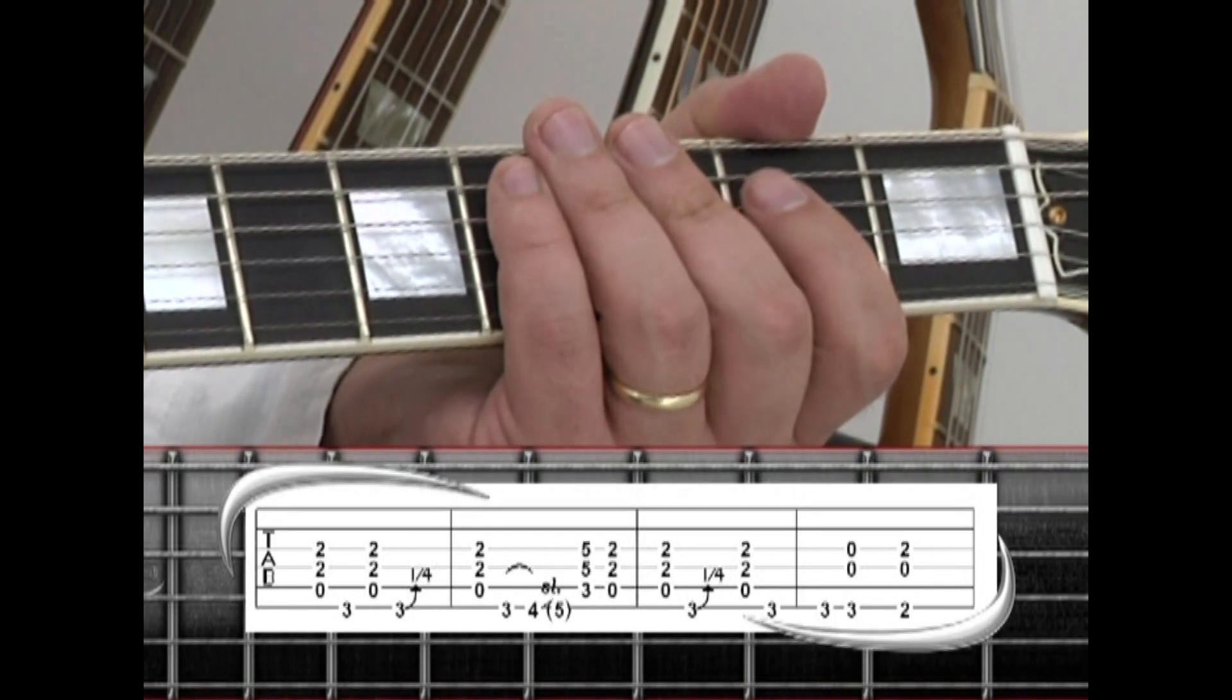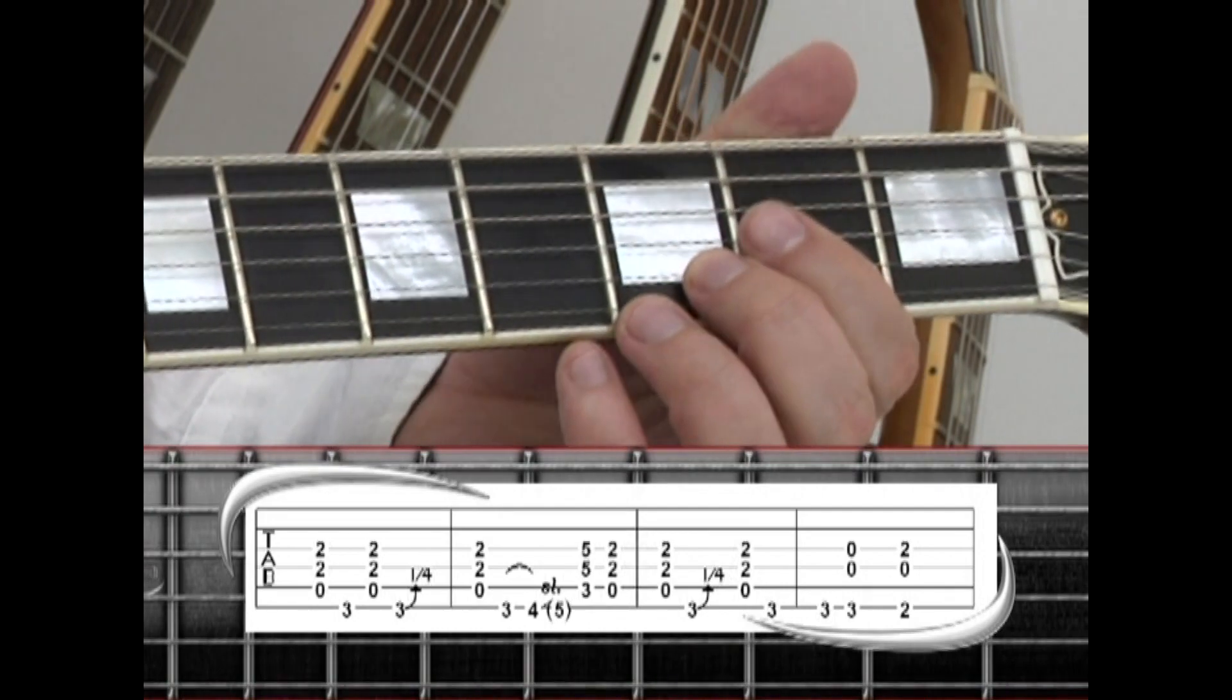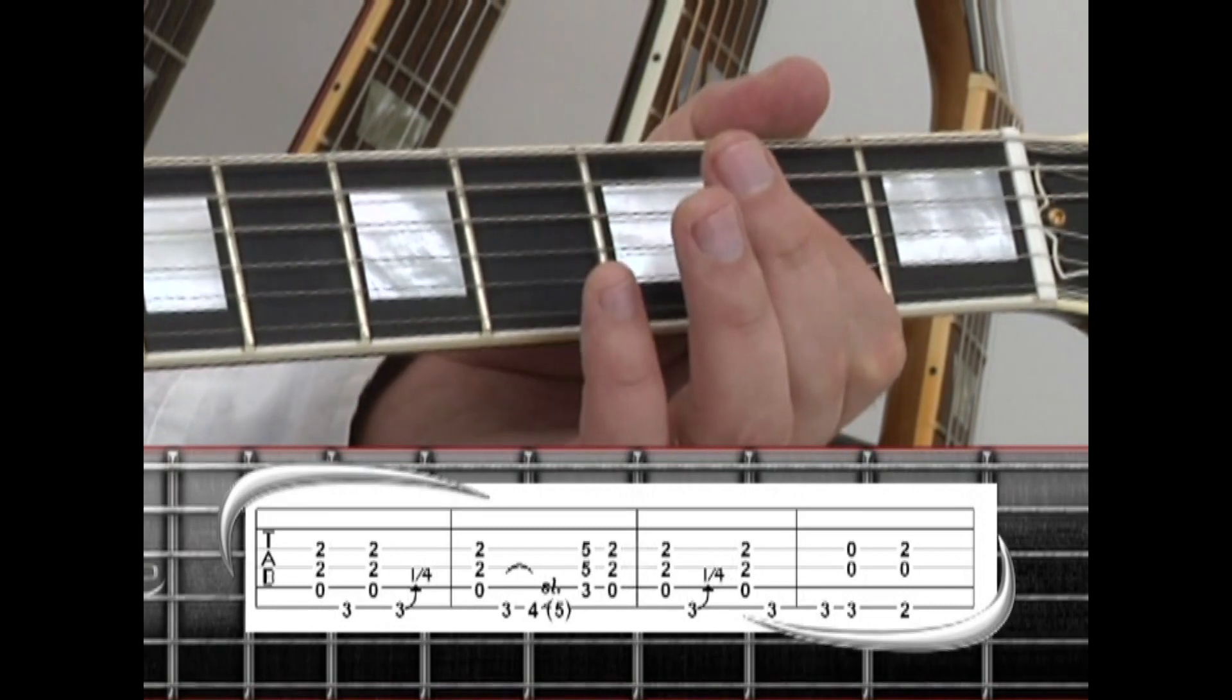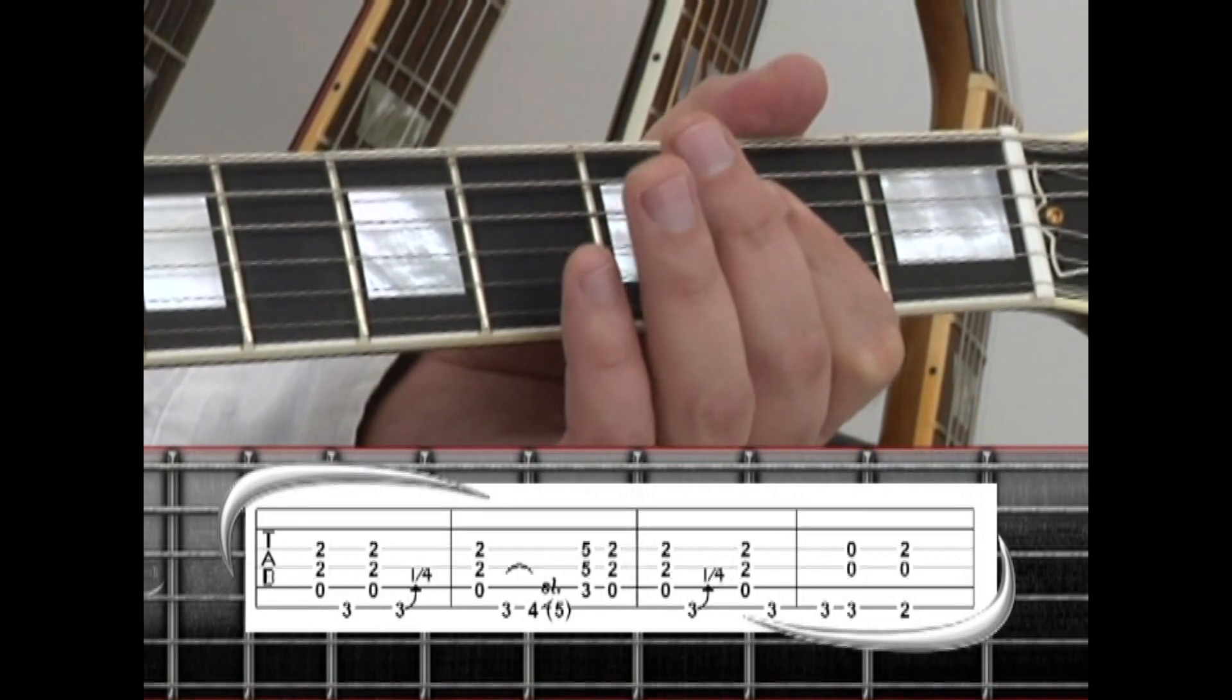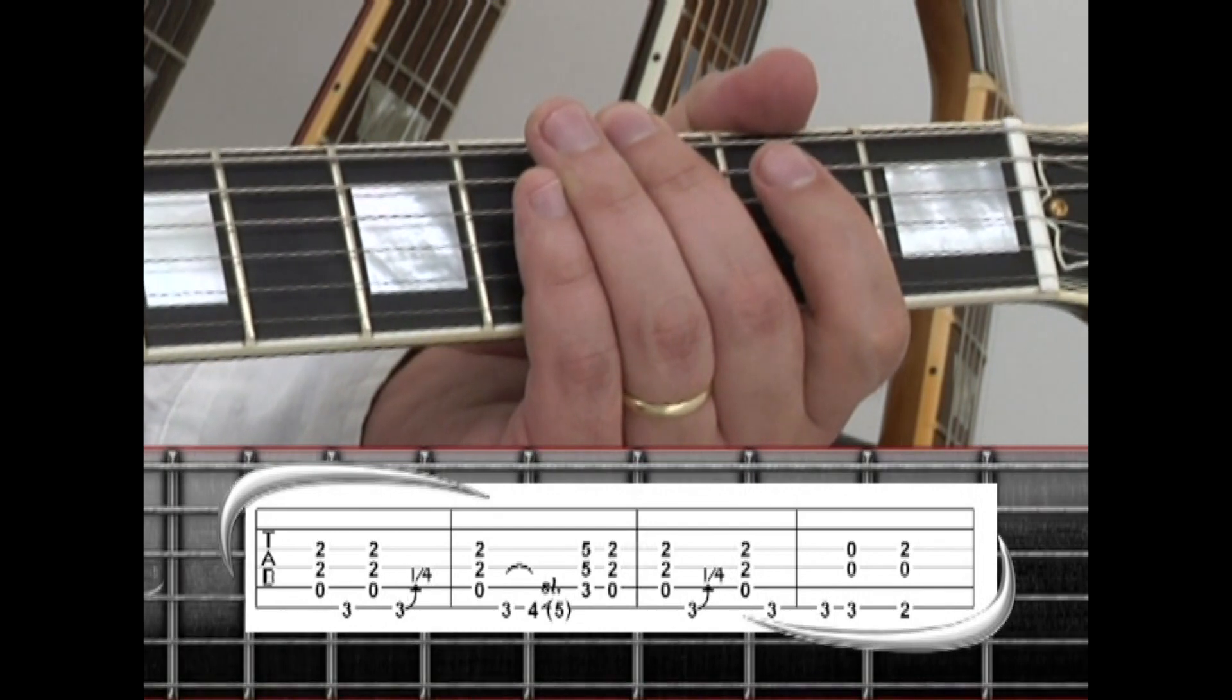Start with an A5, using the 5th string open and a bar on the 2nd fret of strings 4 and 3. Strum the chord and switch to a G note on the 6-string 3rd fret with the middle and mute.